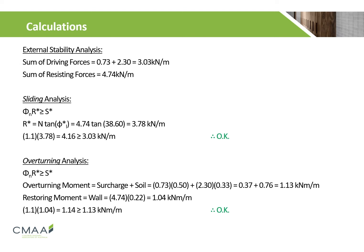Similarly, for overturning, once the lever arm is considered in calculations, we get a factored resisting moment of 1.14 kN·m per meter, which is greater than our overturning moment of 1.13 kN·m per meter. Following these calculations, we can safely say that our design satisfies the design principles to ensure sliding and overturning will not occur.